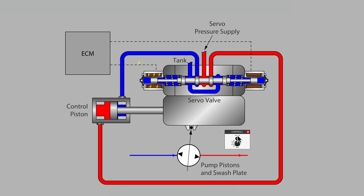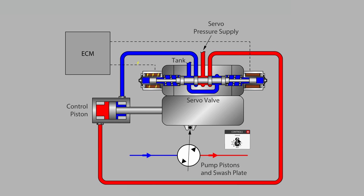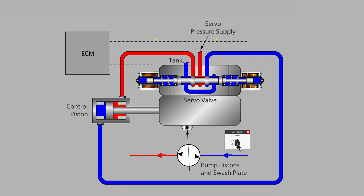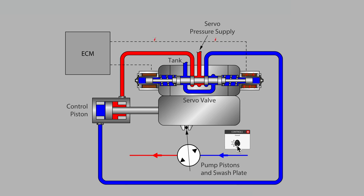Increased swashplate angle results in a longer piston stroke and higher flow rate from the pump's right-hand port. Decreasing the current allows pressure in the control piston to be vented gradually to tank. Moving the control lever past the center point causes flow to be displaced from the pump's left-hand port.